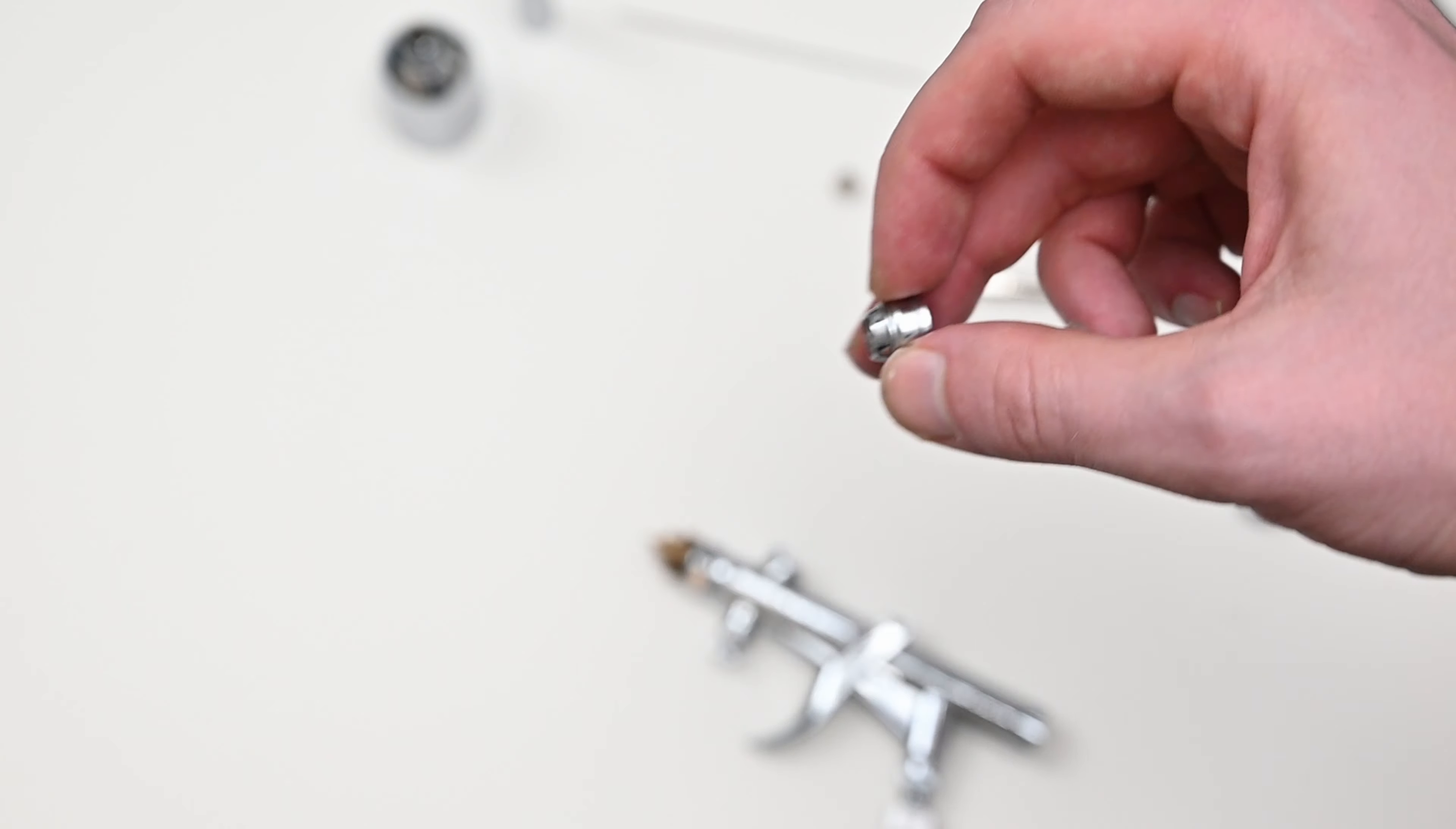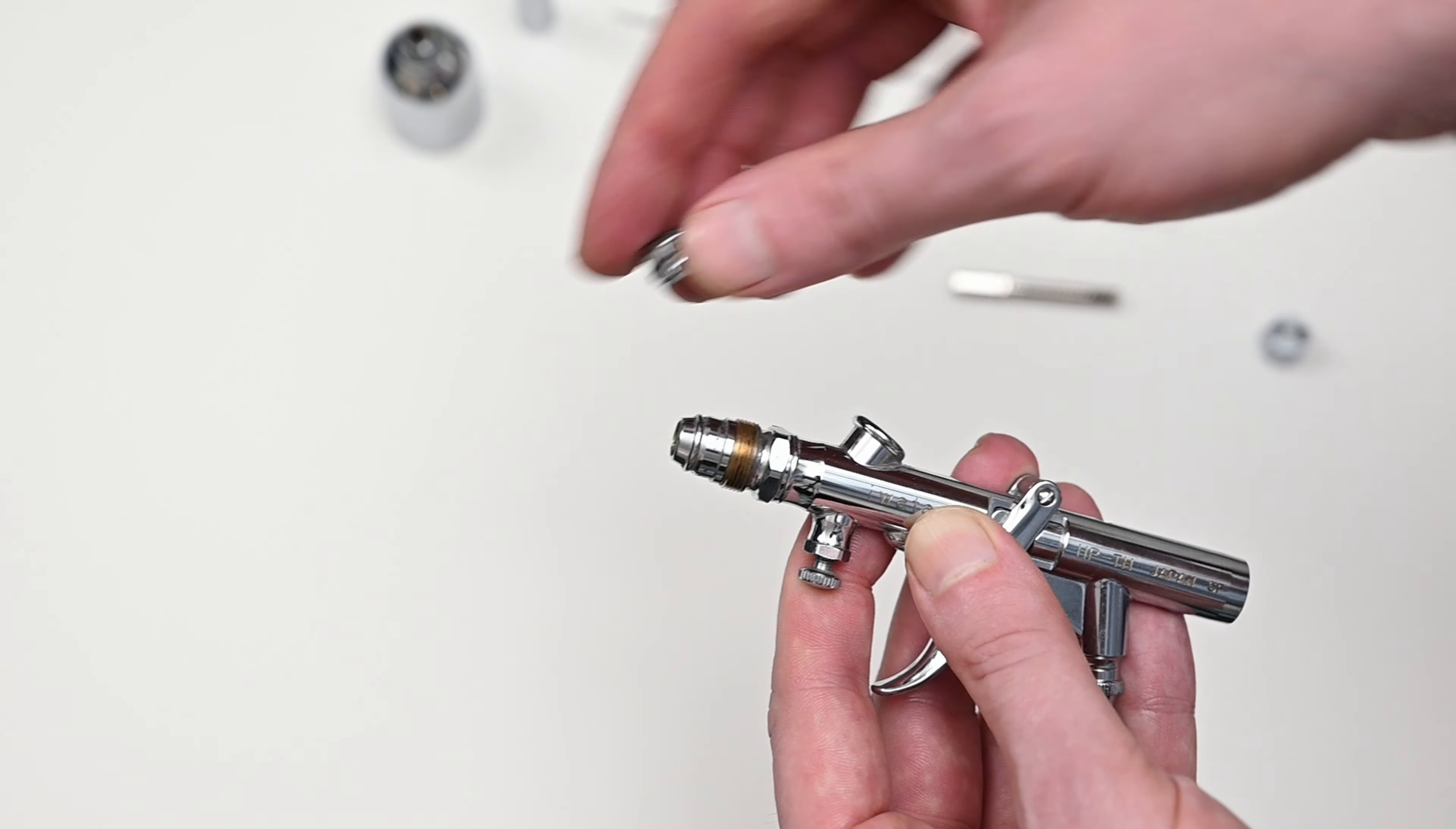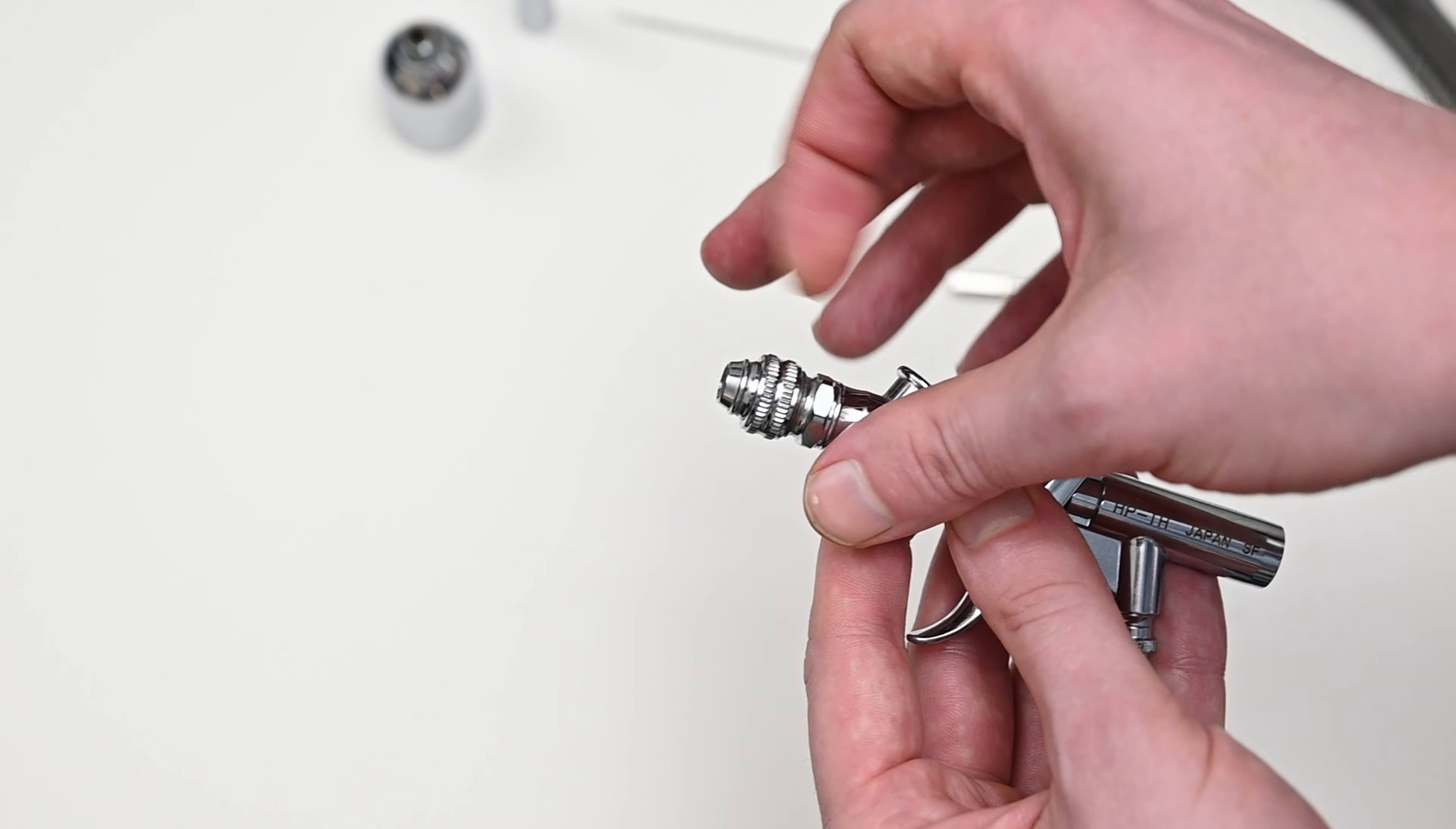The second cap is a round one. This is going to give you that traditional airbrush spray pattern just like every other airbrush that I reviewed on this channel. It's very easy to switch between these two caps even while you're painting. It only takes a few seconds.